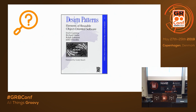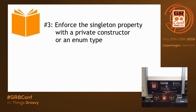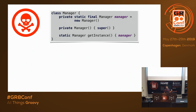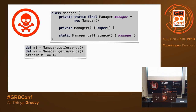Let's move on to Gang of Four design patterns. One of the patterns Effective Java discusses is Singleton — it says: enforce the singleton property with a private constructor or an enum type. I create a class called Manager with a static final field and a getInstance() static method that returns the already-created instance. Calling getInstance() twice and comparing them returns true, meaning only one instance has been created.